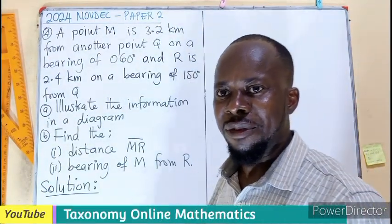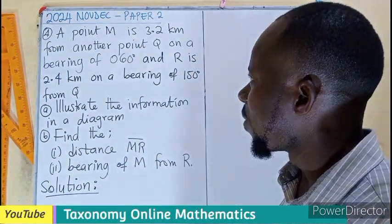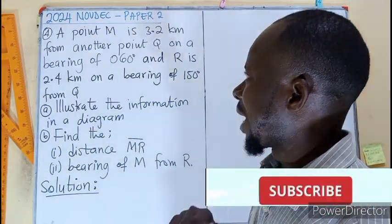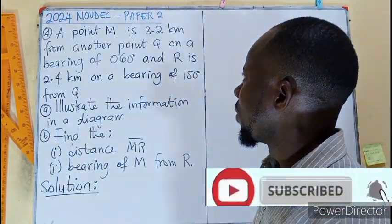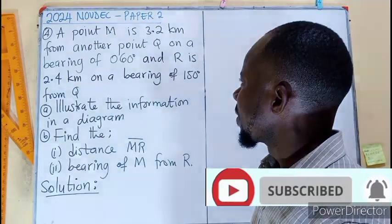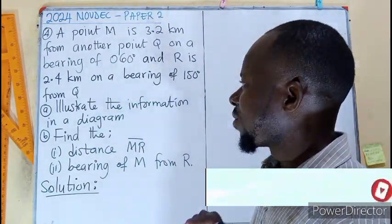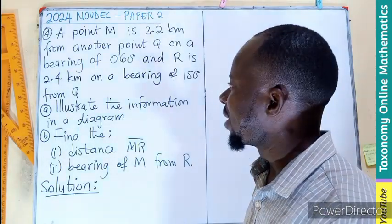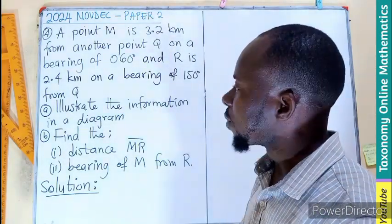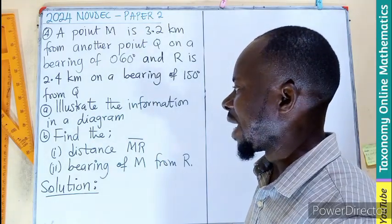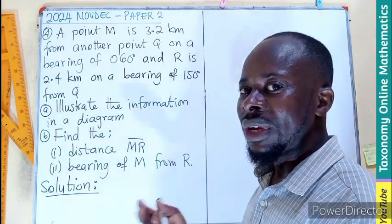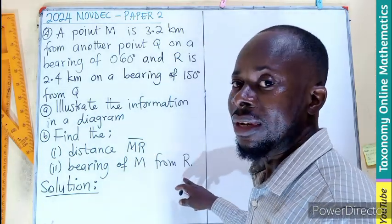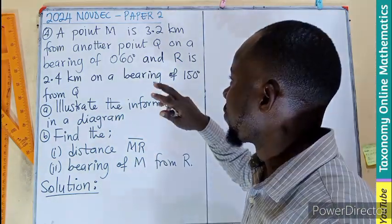Hello, welcome back. Question number four, NOVEC 2024. A point M is 3.2 kilometers from another point Q on a bearing of 60 degrees, and point R is 2.4 kilometers on a bearing of 150 degrees from the same point Q. We are to illustrate the information on a diagram, find the distance between M and R, and the bearing of M from R. Let's begin.